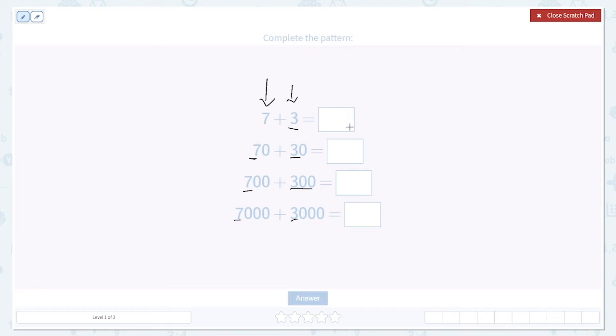It's a pretty clear pattern. We keep adding zeros and we keep shifting the digit over by one place. Let's try filling out the right-hand side of this and see what pattern we see over there. Seven plus three, that's 10.